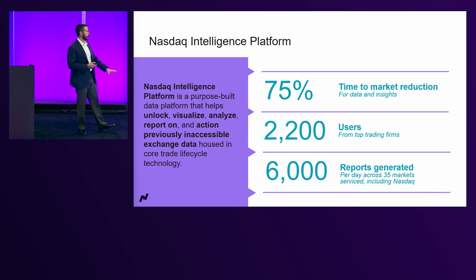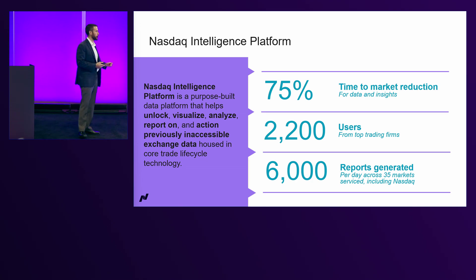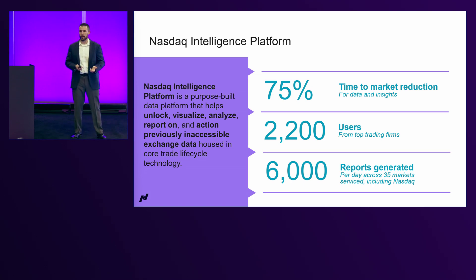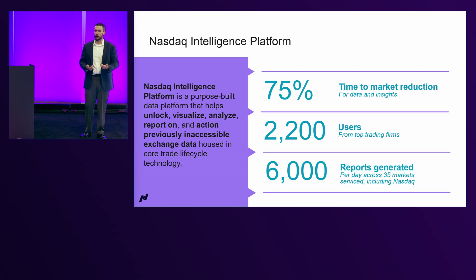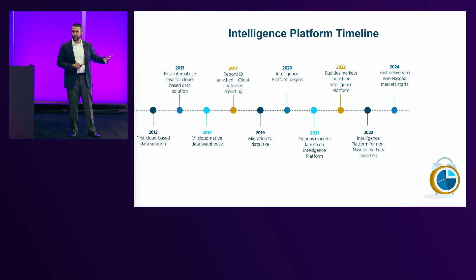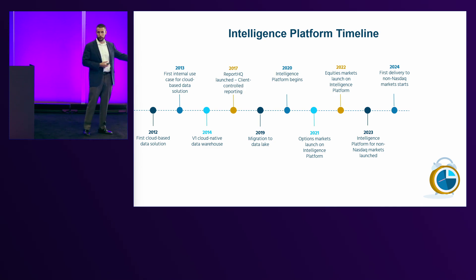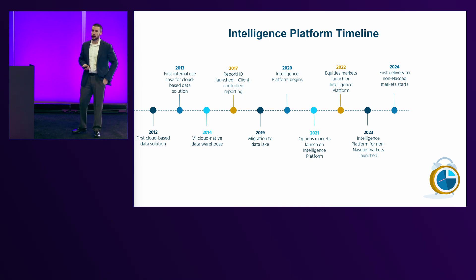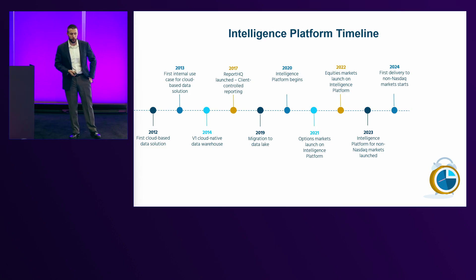Breaking down some of the numbers behind the intelligence platform: since we've launched this, we have had a 75% reduction in time to market with new reports or insights. On our own internal deployments, we have roughly 2,200 users leveraging the reporting product, and we generate roughly 6,000 to 10,000 reports per day — a decent amount of churn that has to meet SLAs. We've been in the cloud since 2012, started with a regulatory reporting product, and transitioned to solving our own use cases. More recently we've launched the intelligence platform for non-Nasdaq markets, and at the end of this year into next year we're going to start launching this for non-Nasdaq markets in production.